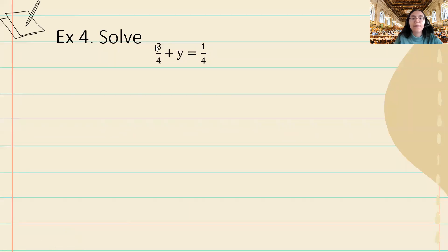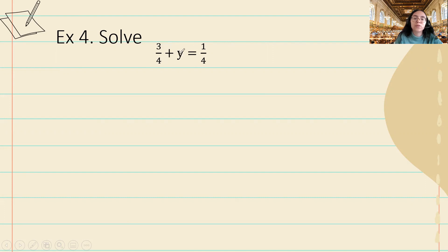Let's continue to the next example. Here we are solving for y. We have three-fourths plus y is equal to one-fourth. I am going to move the three-fourths over to the right-hand side. It's being added, so I'm going to do the opposite, which is subtraction — I'm going to subtract three-fourths from both sides.